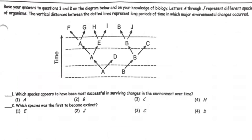Here is a practice question. It asks which species is most successful in surviving changes in the environment over time. So if time is depicted on the left axis, the more recent time is at the top and the past is at the bottom. The species that's been around since the past and has continued to be present in present time is species B, because species B was around in the past and it continued to be able to survive throughout changes over a long period of time.